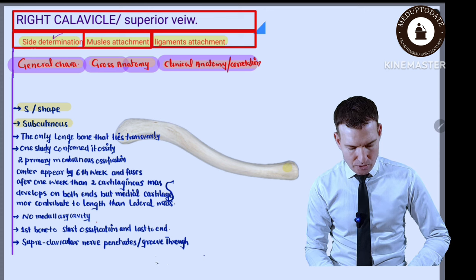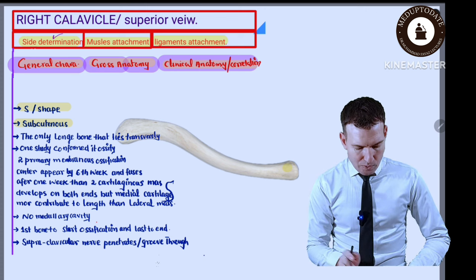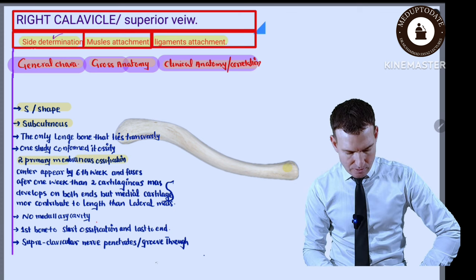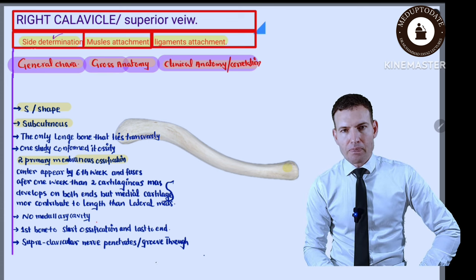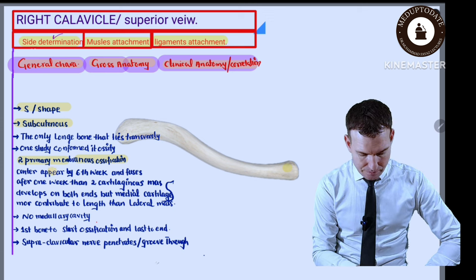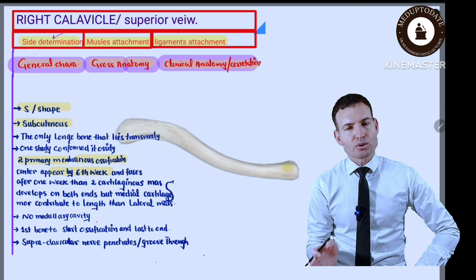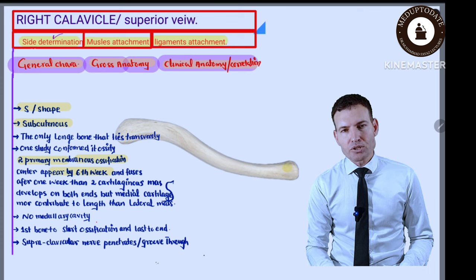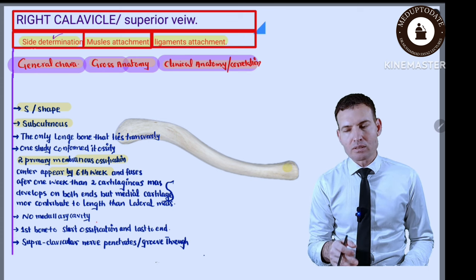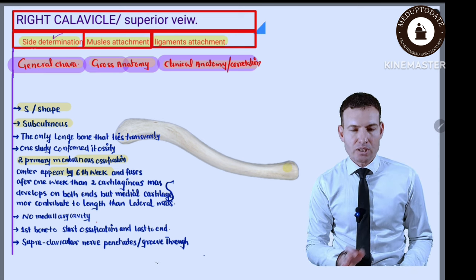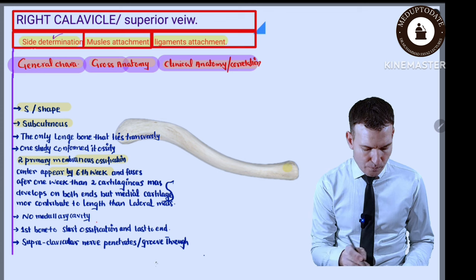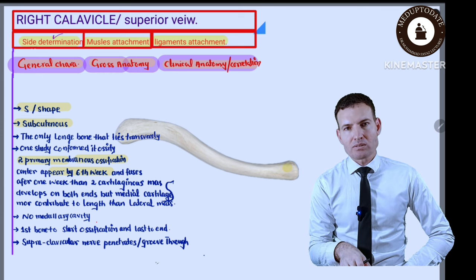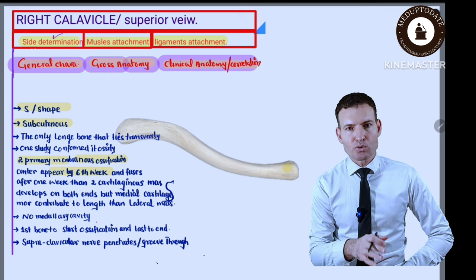Especially when someone falls on an outstretched hand, the body weight transfers to the clavicle and causes fracture. One study confirmed that it ossifies from two primary embryonic ossification centers by six weeks. Ossification then starts, and two cartilaginous masses appear — one at the sternal end (medial end) and one at the acromial end (lateral end). The medial mass contributes more to the length compared to the lateral mass.